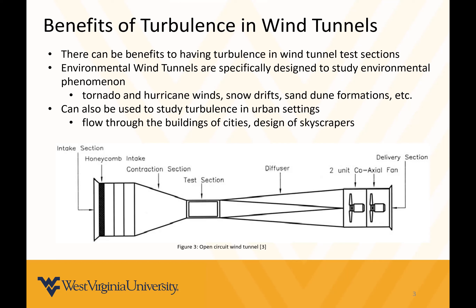They're also used to help design skyscrapers. Here's a picture of an open circuit wind tunnel — it also has honeycomb screens to help straighten the flow and reduce turbulence. The air is pulled through the tunnel by fans typically at the end. The environmental wind tunnel that WVU has, acquired by Dr. Browning, is set up similarly with a longer section called the fetch, which helps ensure the flow is fully developed by the time it reaches the test section.